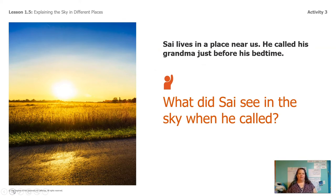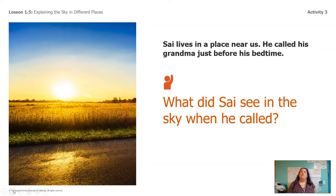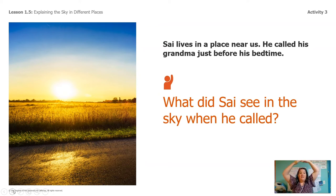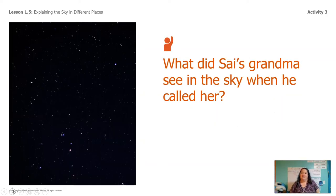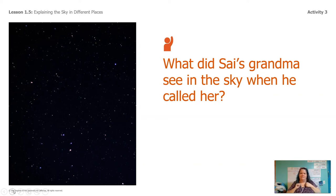Sai lives in a place near us. When he called his grandma right before bedtime, what did he see in the sky? We can look at this picture — did he see the Sun, so it was daytime, or did he see the stars, so it was nighttime? He saw the Sun, so for Sai it was still daytime. What does Sai's grandma see when he called her? When she looked out, did she see the Sun or stars? She saw stars — so Sai's grandma saw stars when Sai saw the Sun.